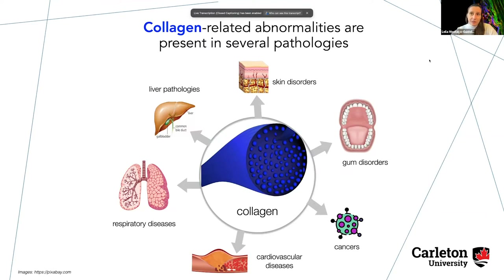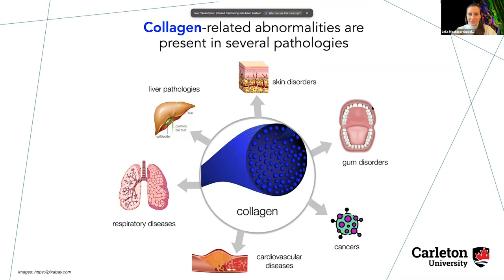For example, if we look at different types of skin disorders, pathologies of the liver, lung diseases, or cardiovascular diseases, if we dig deep enough, we are always going to find some changes related to collagen structure. That's a very interesting reason to take a look at how all these changes might be playing a role in the cell environment, and what we can do to try to find a cure for different kinds of diseases.